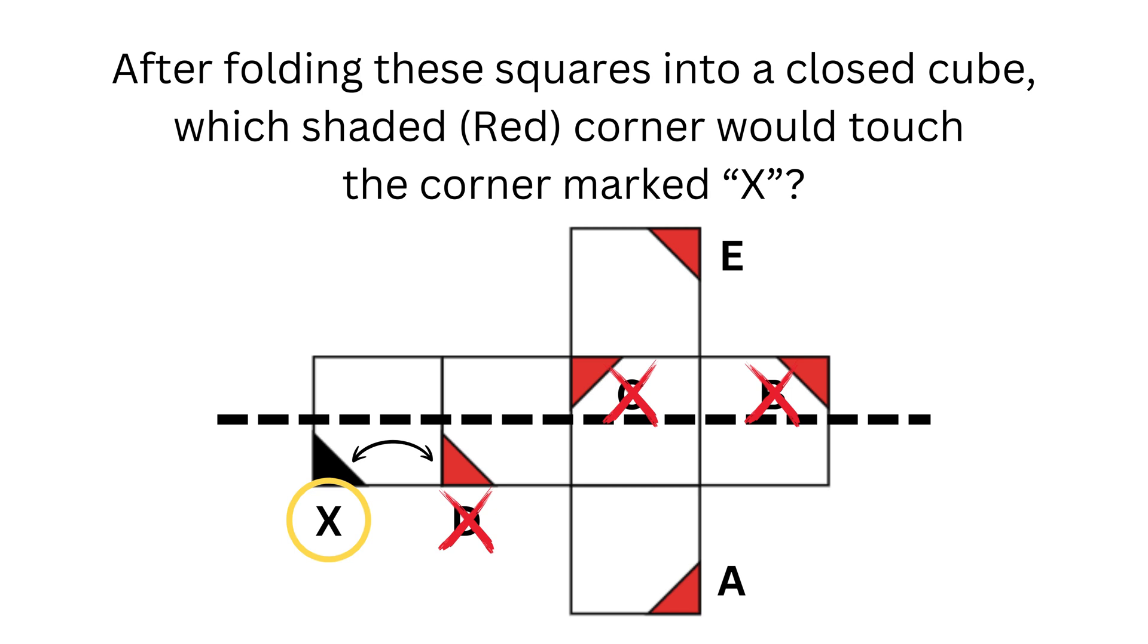But the answer is option A. As a rule of thumb, the box attached on all four sides is the cube's base, so won't move. The box which isn't touching the base, in our case the one with an X, will be the cube's top, so we can flip it 180 degrees.